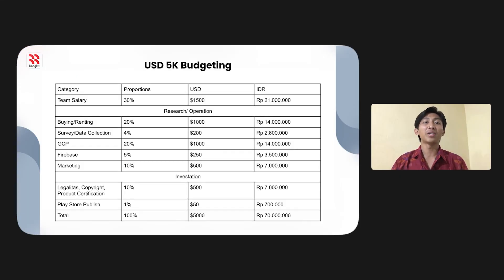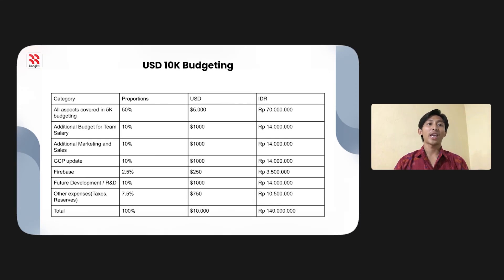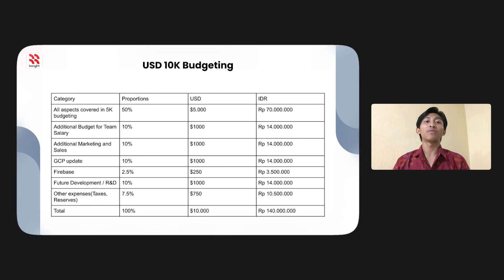Our budget plan one is $5,000, covering three main categories: team salary, research and operations, and investment, each with subcategories totaling $5,000 or approximately 70 million rupiah. Our budget plan two is $10,000, with seven categories each having its own breakdown totaling $10,000.